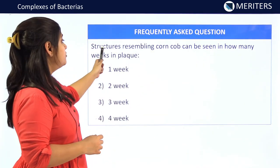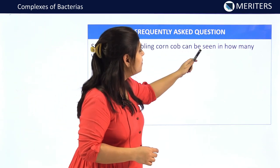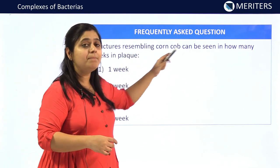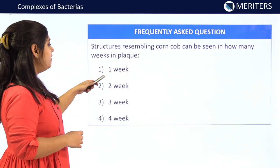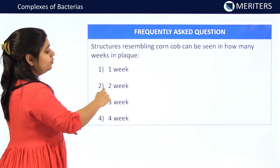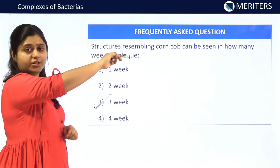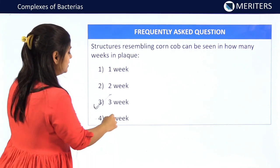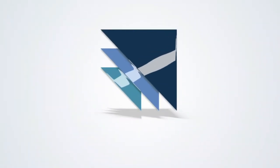The next question is: structures resembling corn cob formation in plaque can be seen in how many days? The options are 1 week, 2 weeks, or 3 weeks. Structures resembling corn cob formation are seen in the plaque at 3 weeks. So, 3 weeks is the answer.